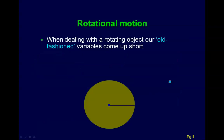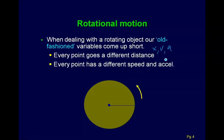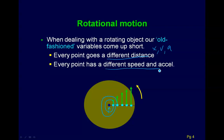When dealing with a rotating object, our old-fashioned variables come up short. Those old-fashioned variables would be position, linear velocity, and linear acceleration. Suppose we have five blue dots on a rotating green disk — all these dots are going to travel a different distance. The inner one goes a much shorter distance than one further out. They're all going to have different linear speeds and accelerations, so our old-fashioned values are going to be different for all five of these points.